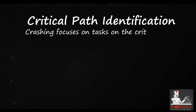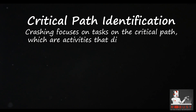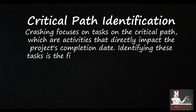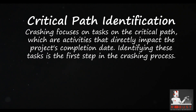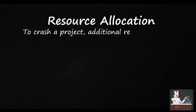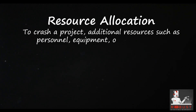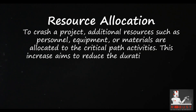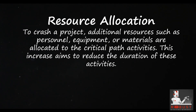Critical path identification: Crashing focuses on tasks on the critical path, which are activities that directly impact the project's completion date. Identifying these tasks is the first step in the crashing process. Resource allocation: To crash a project, additional resources such as personnel, equipment, or materials are allocated to the critical path activities, aiming to reduce the duration of these activities.